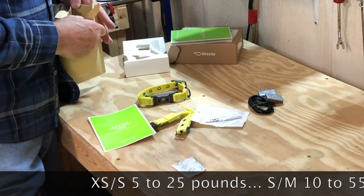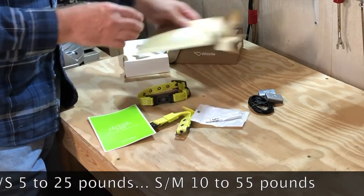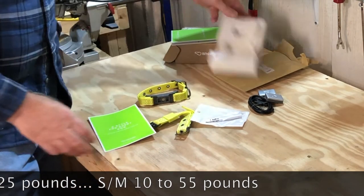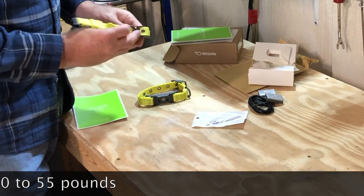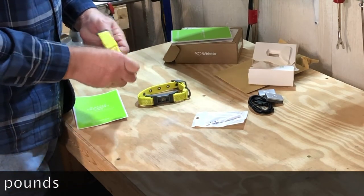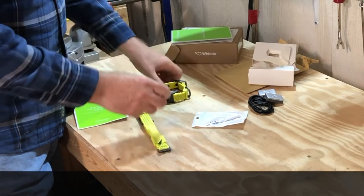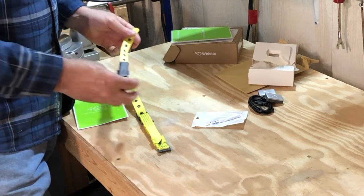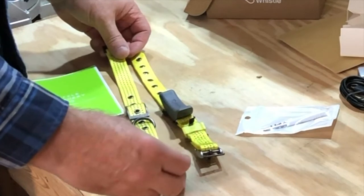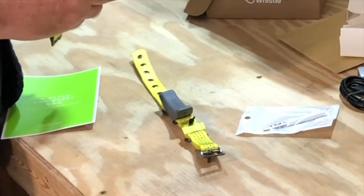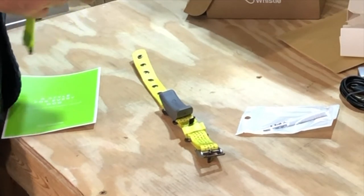Their website says this extra small/small is for dogs 5 to 25 pounds and the small/medium is for dogs 10 to 55 pounds. So there's some overlap and as it turns out, I'm on the smallest hole with my 12 pound dog on this collar. I'm laying the collars out on the table so you can see the differences in sizes.